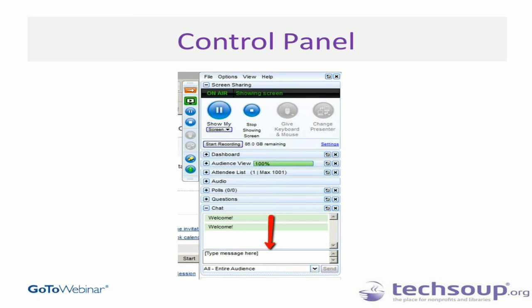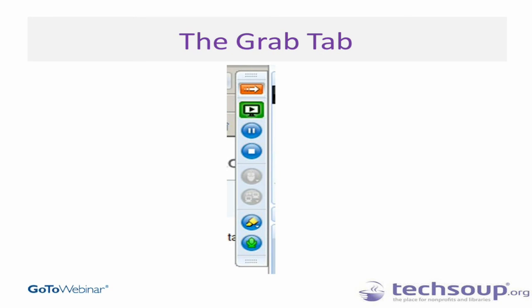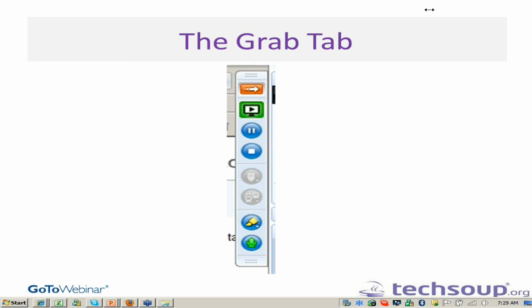Thank you everybody for rejoining us today. I apologize for the late start — I think it's going to give us something really substantial to talk about when we get to the troubleshooting section. The little string of buttons next to the big box is called the grab tab. You'll want to notice the mute button, and also notice the orange arrow, which is how you go ahead and minimize the control panel.